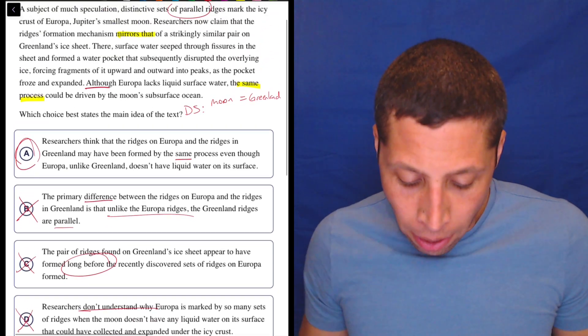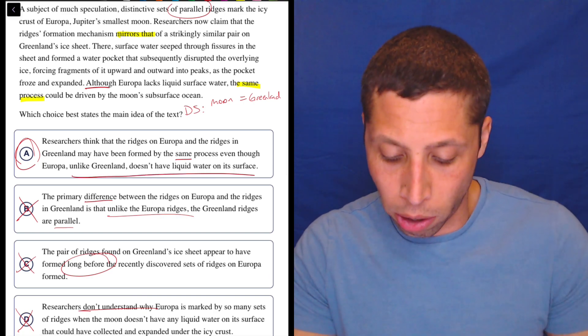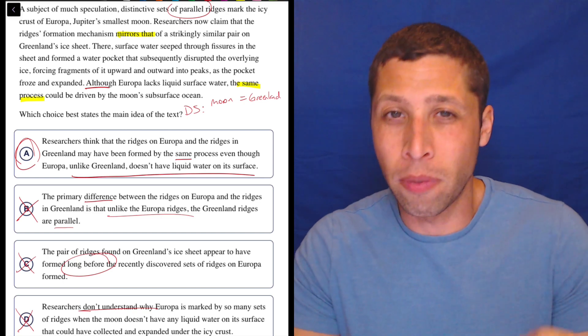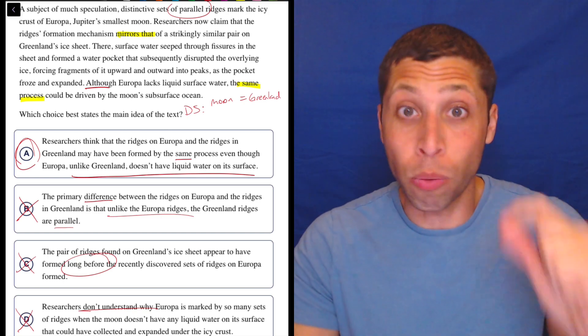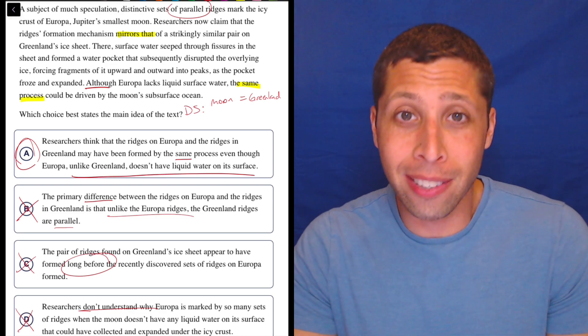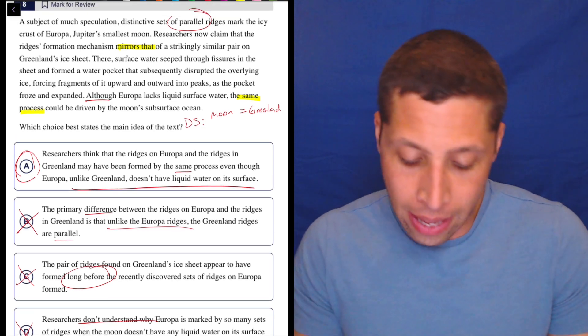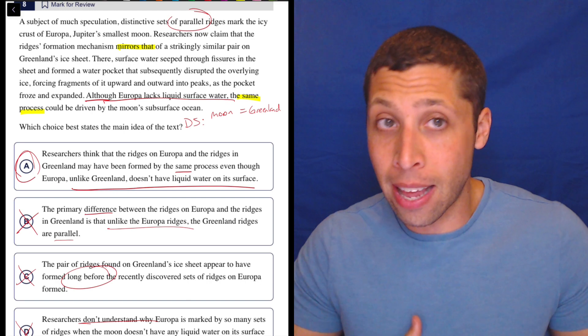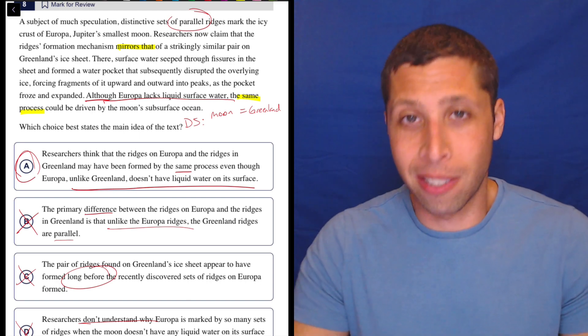Now there is this piece at the end, unlike Greenland, Europa, unlike Greenland, doesn't have liquid water on its surface. So they are pointing out some sort of difference. But notice that that difference is a minor piece of the choice. The choice is really saying that these things are the same. And the passage also says that, yeah, there's a difference in the surface water. So Europa doesn't have liquid water on its surface. They say that right here. So it is there. It doesn't bother me. The main thrust of that choice is the similarity. And that's what we picked up from our dumb summaries.